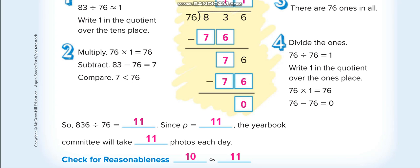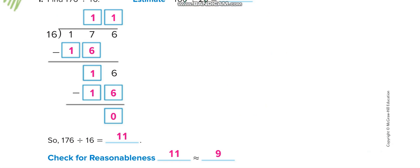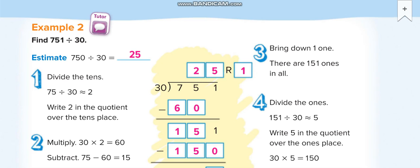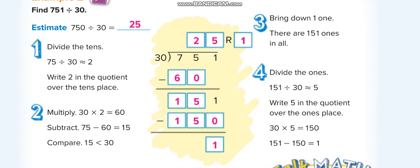Next page. This shows the estimate of 751 is 750, and the estimate of 30 is 30. When you divide, we use estimates to help find the actual quotient. The actual dividend is 751 and divisor is 30, so we don't need the first digit because the first two digits are more than the divisor.